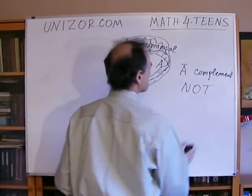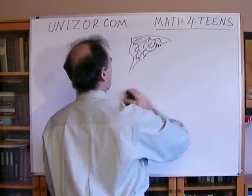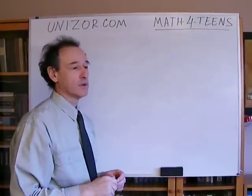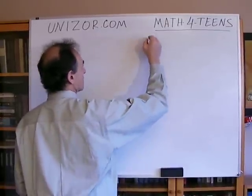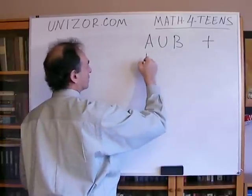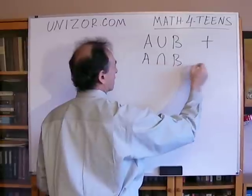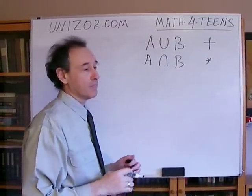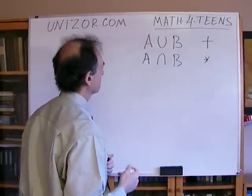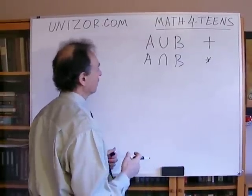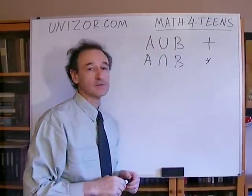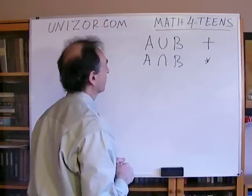Now, a few very interesting rules in set theory which you might find common with arithmetic. Basically, union is very much like addition and intersection is very much like multiplication. There are certain similarities between these operations.